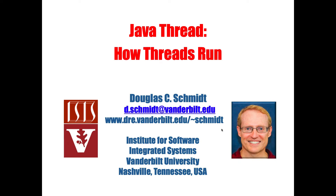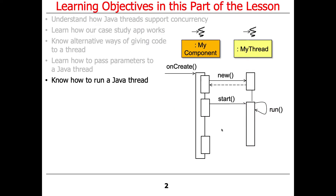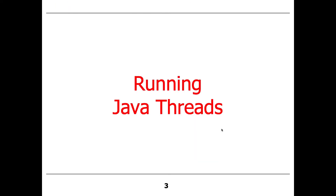Now that we've talked about how to pass parameters and how to give code to a thread, let's talk about how threads actually run under the hood. We'll cover this now with enough information to get you the big picture, and then later in the course we'll go into much more detail. But that'll come a lot later because you don't need to know those details at this point yet.